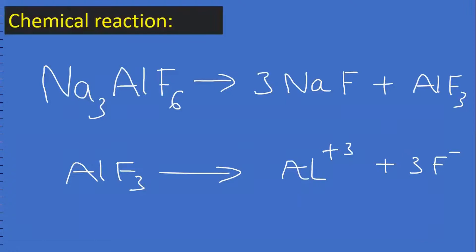What is the chemical reaction? Cryolite, Na3AlF6, dissociates into sodium fluoride and aluminum fluoride. AlF3 again dissociates into ions.